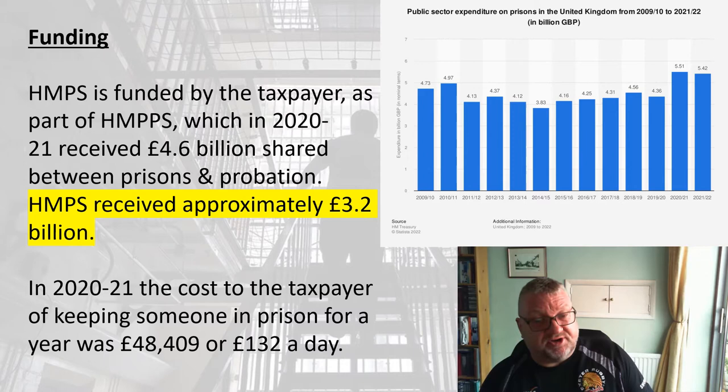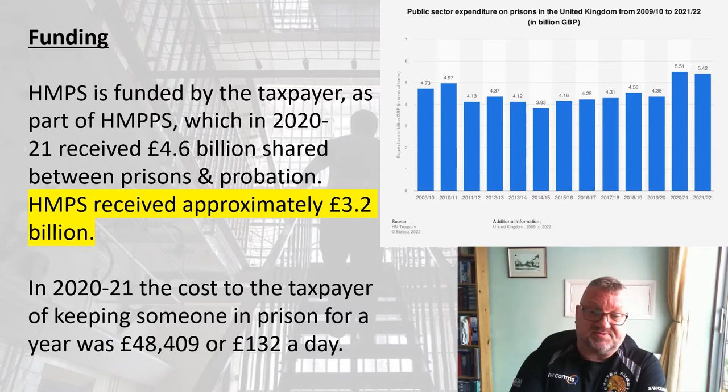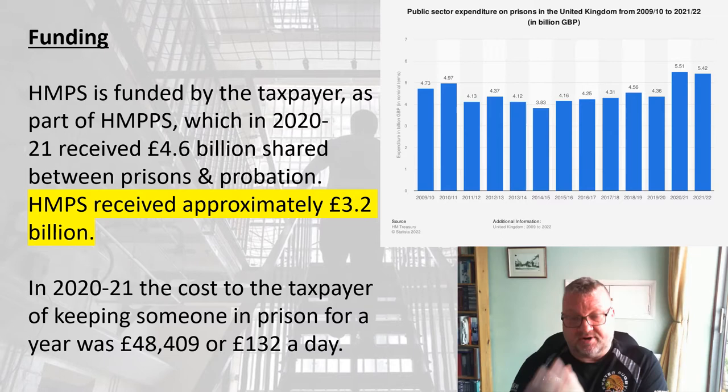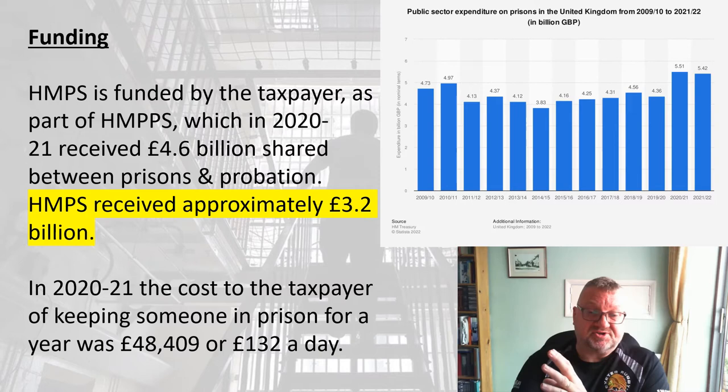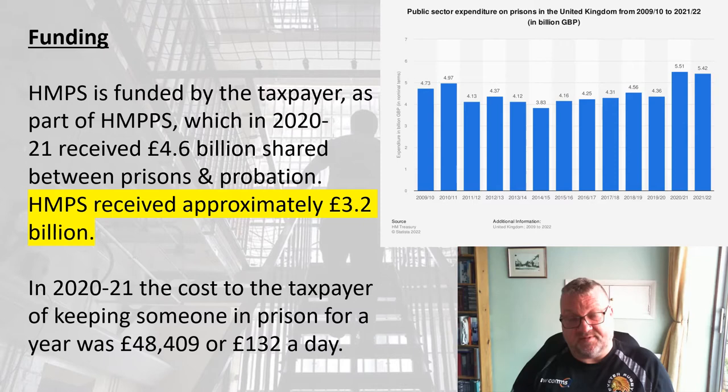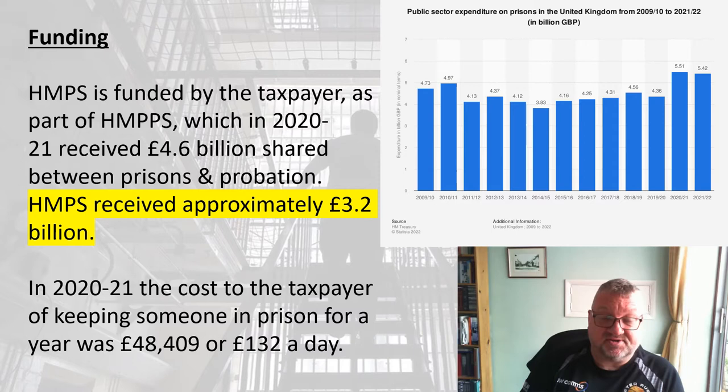This works out to a very useful statistic: in 2021, the cost to the taxpayer of keeping someone in prison for a year was £48,409, or £132 a day. When you think about any assessment of the prison system, it's useful to have this figure because if someone is in prison costing us £48,000 a year, at the same time that person is not working, so they're not paying tax and not contributing anything to the economy.